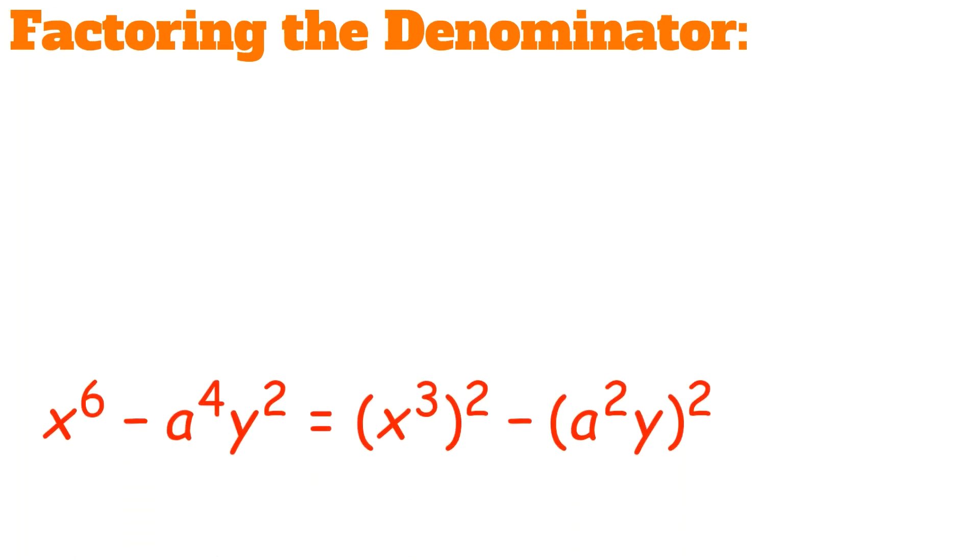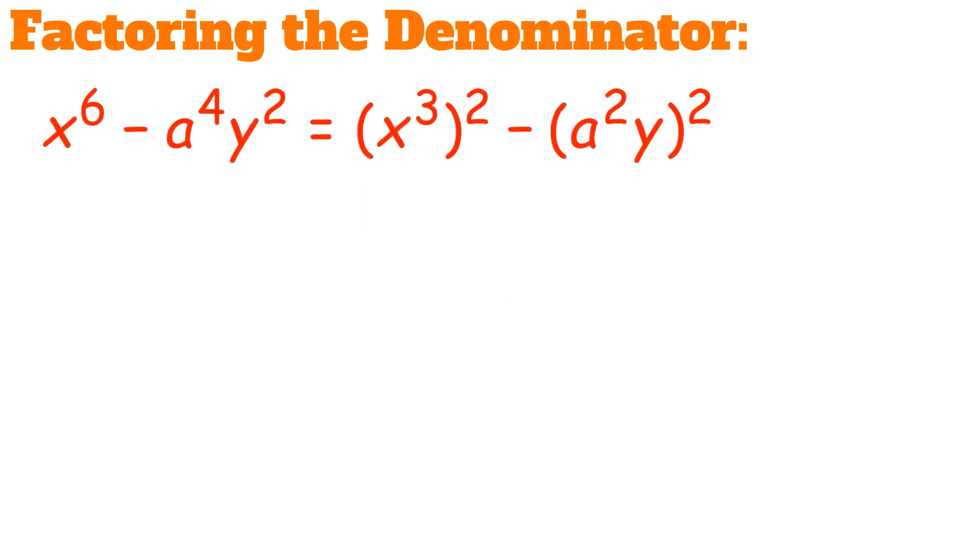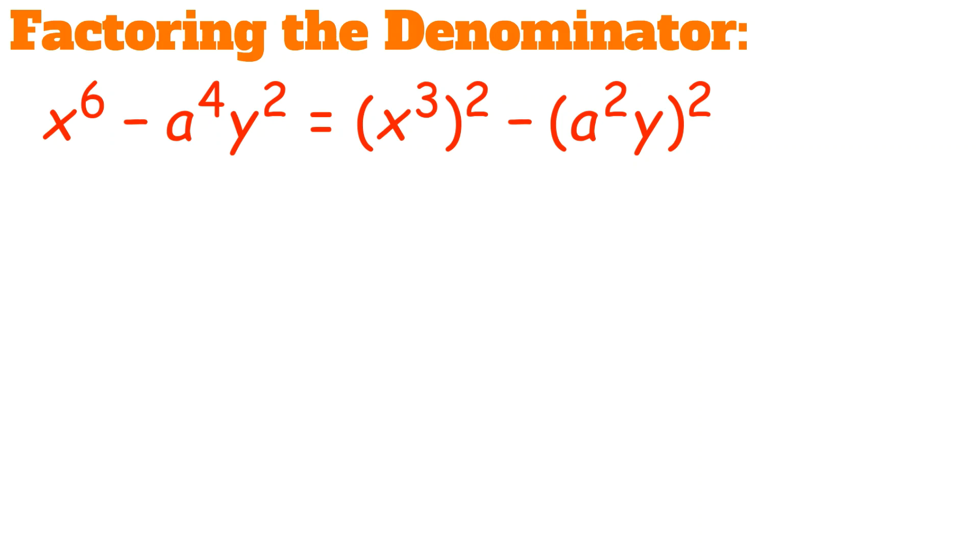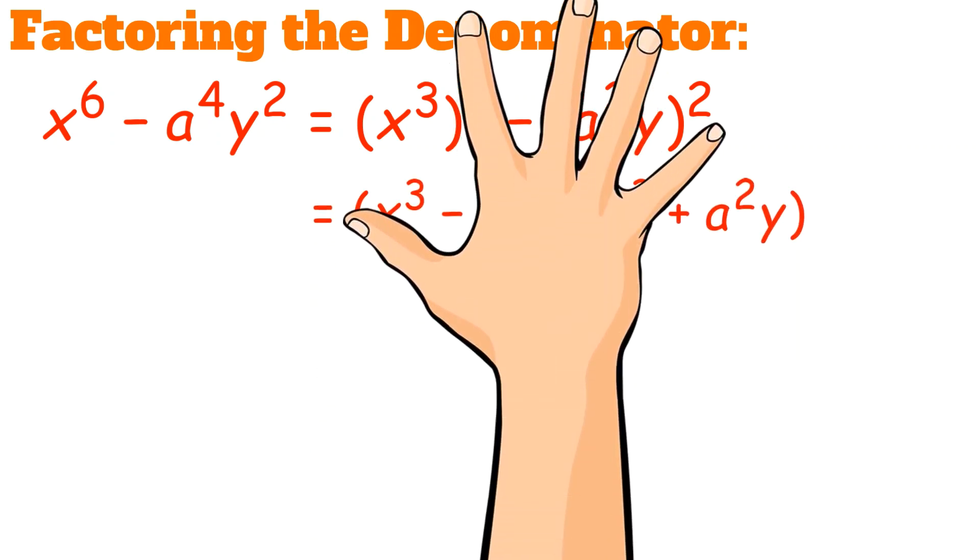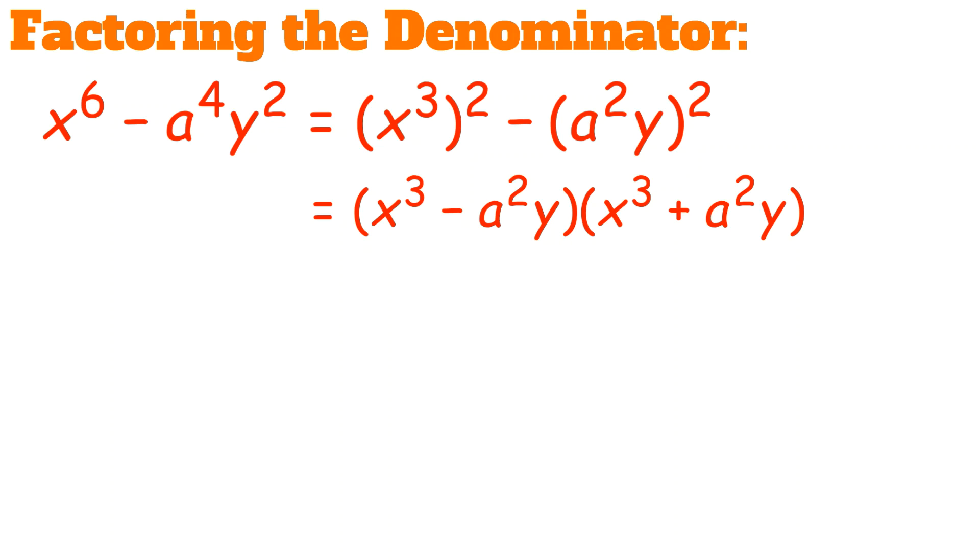Factoring the denominator, we get that x to the power of 6 minus a to the power of 4 times y squared is equal to x cubed squared minus a squared y squared. Using the formula that we just learned about for the difference of squares, we get x cubed minus a squared times y times x cubed plus a squared times y.